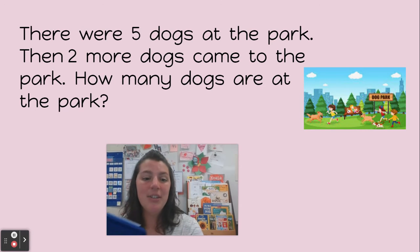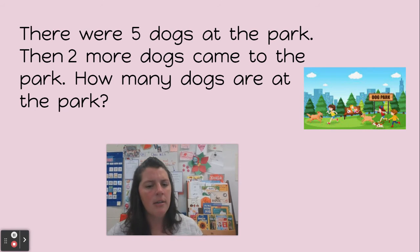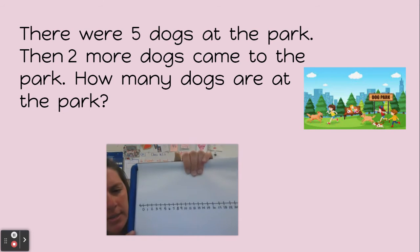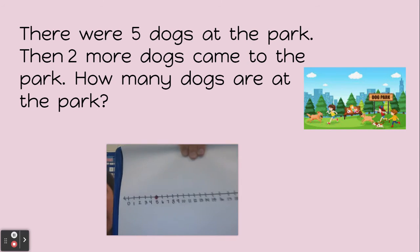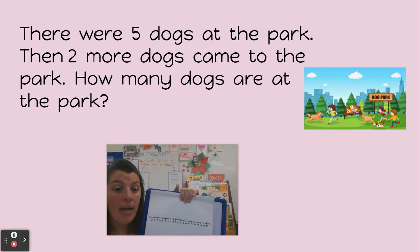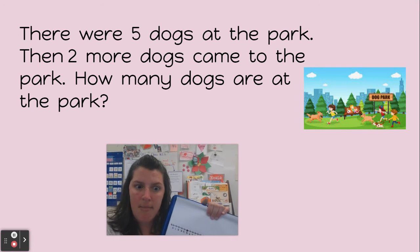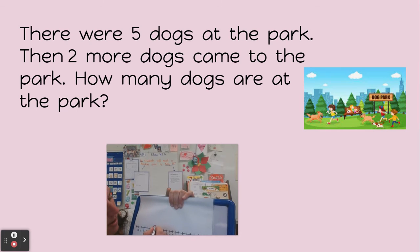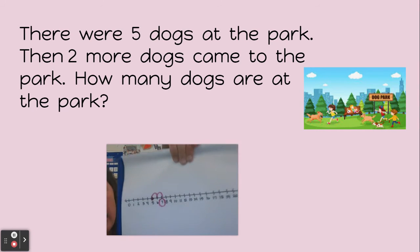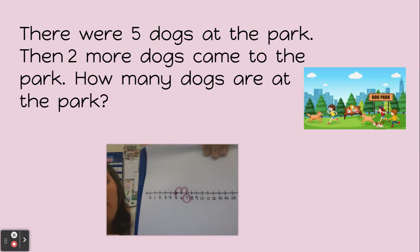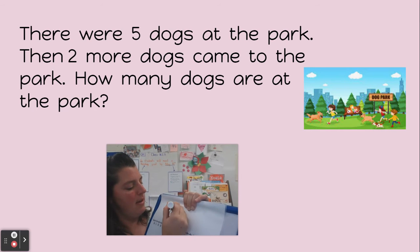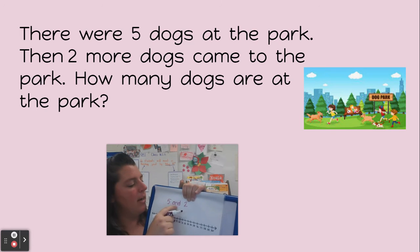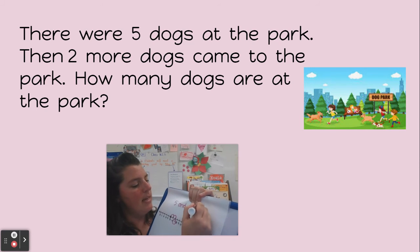So here's what I did — I want you to pay close attention because you're going to have to check my work. The first thing I did was think, I know there are five dogs at the park, so I put a circle here on the number five. That's where I started. Then two more dogs came to play with them, so I made two jumps: one, two. And I decided there are seven dogs at the park. So I think five and two — the five dogs that were at the park and two dogs who came — is seven.